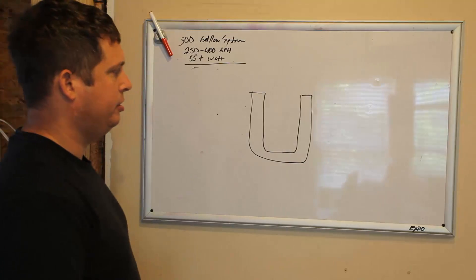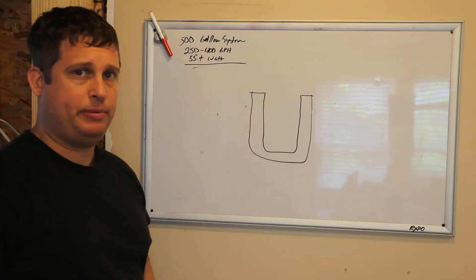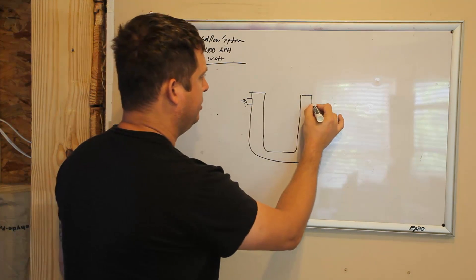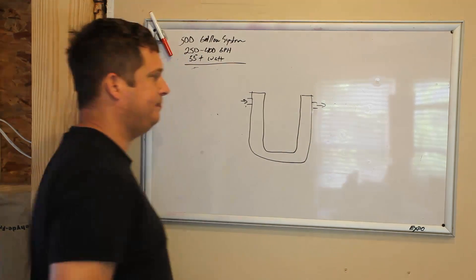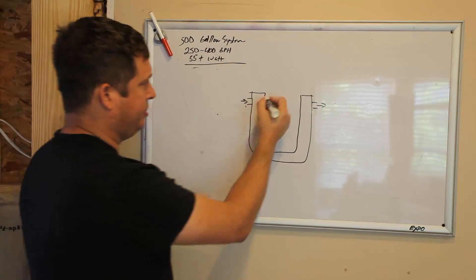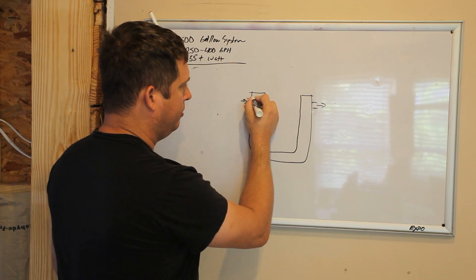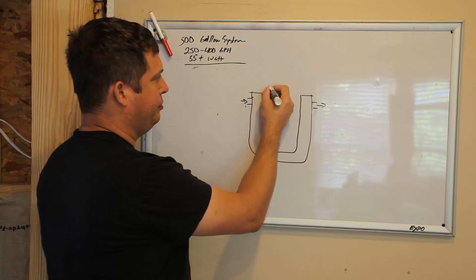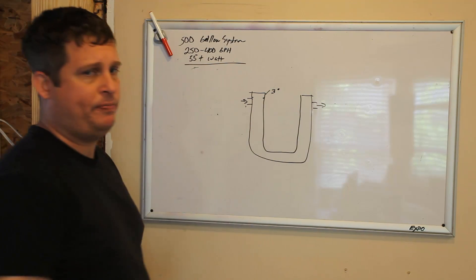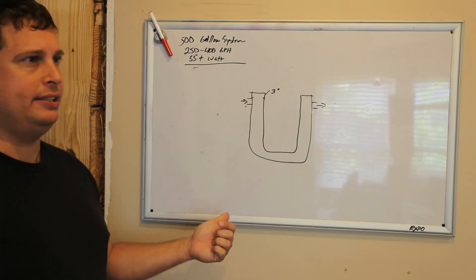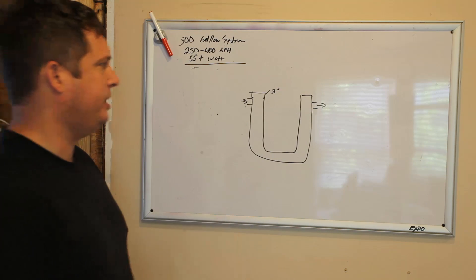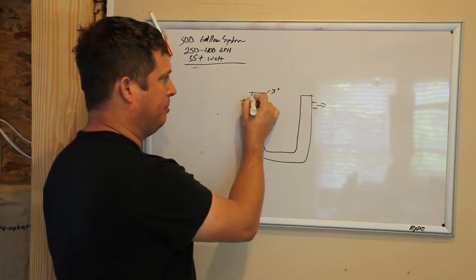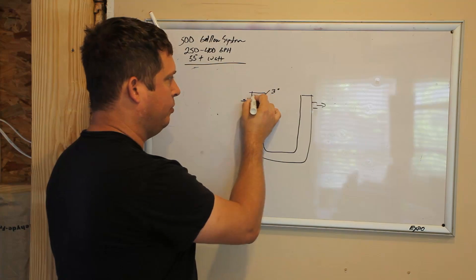What I plan to do is put together a U-shaped section of 3-inch pipe with an inlet and an outlet. If you use 3-inch pipe you can take a 3-inch plug that screws in and you just turn it upside down and drop it in here, and that's going to hold my lights.